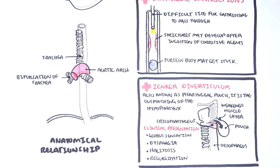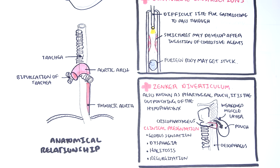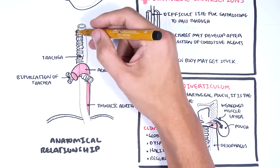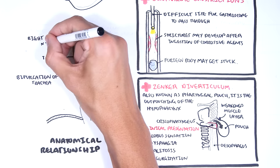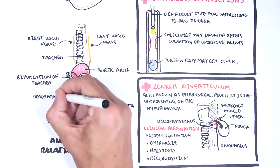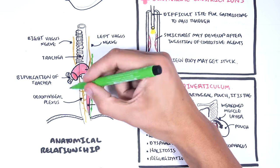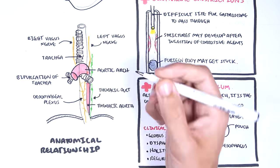The arch of the aorta wraps over the left main bronchus and travels posterior to the esophagus. You have the right vagus nerve and left vagus nerve on both sides of the esophagus, which supply the esophagus, forming the esophageal plexus. The thoracic duct travels left of the esophagus.